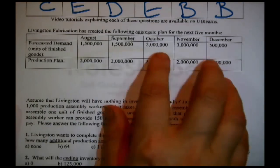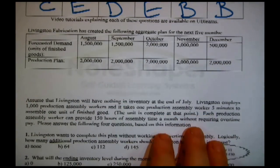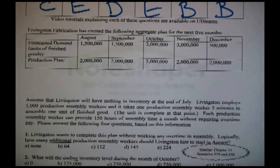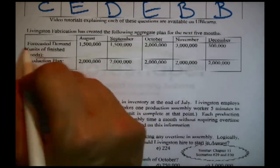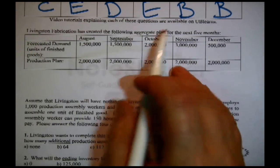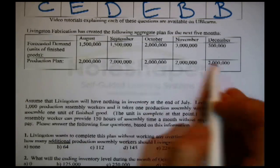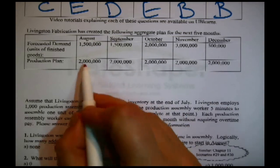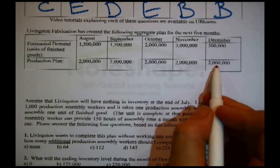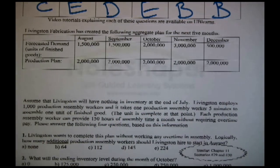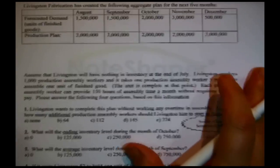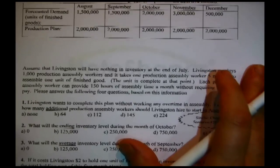Livingston Fabrication has created the following aggregate plan for the next five months. Here's the forecast — aggregate plans always have a forecast — and then there's the plan. It's a perfectly level plan. What are we supposed to do with this?